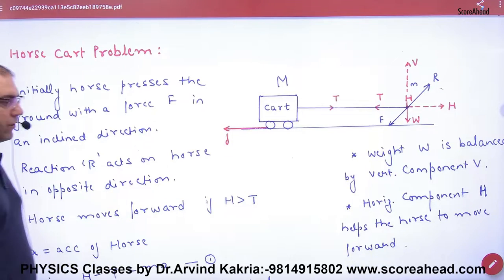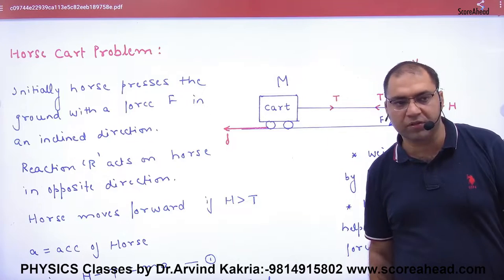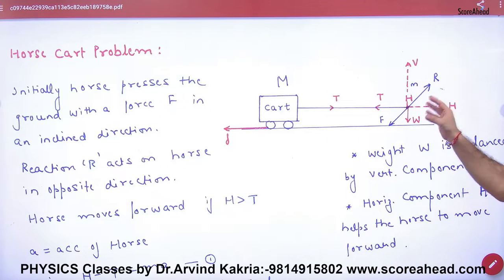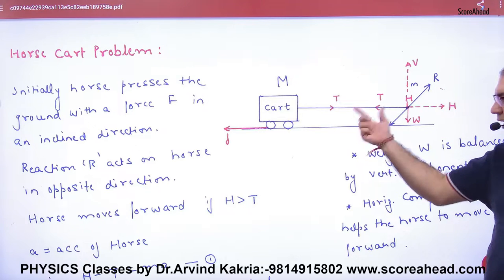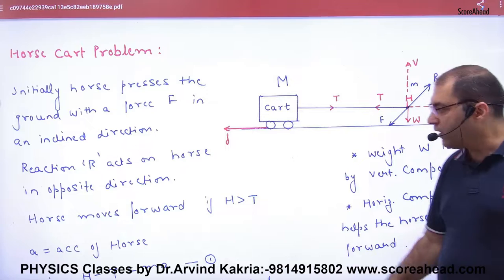Horse cart problem. Let us suppose this cart with mass M, this horse with mass m, connected by a rope with tension T. The cart will move forward, friction will act. When the horse is running, tension is T.